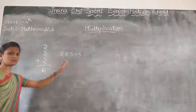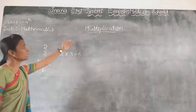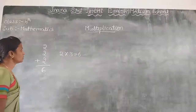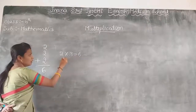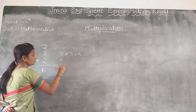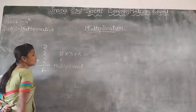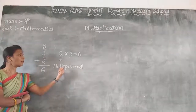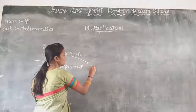You get the same answer either way. For this reason, we say that Multiplication is the shorter way of Addition. Here, in 2 into 3 equals 6, the number 2 is called as the Multiplicand — that is, the number which has to be multiplied.